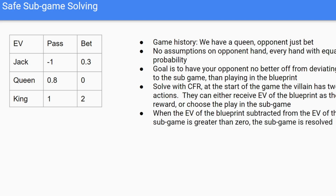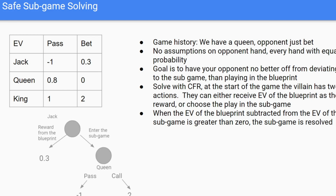When the expected value of the blueprint subtracted from the expected value of the subgame is non-negative or greater than zero, we have resolved this subgame in its unabstracted form. We draw a random card — say Jack — and the opponent has two options: get the reward from the blueprint, or enter the subgame. This is what we're trying to balance.